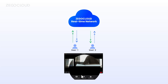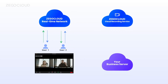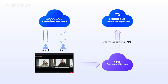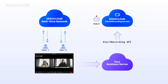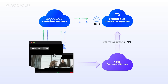When the cloud recording starts, your business server will call the start recording method to notify the Zego Cloud recording service to start recording. At the same time, a cloud recording robot arrives in the room and begins recording the streams.